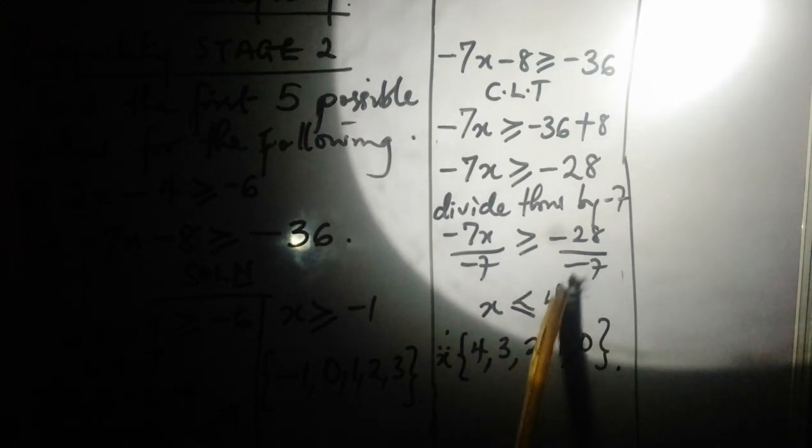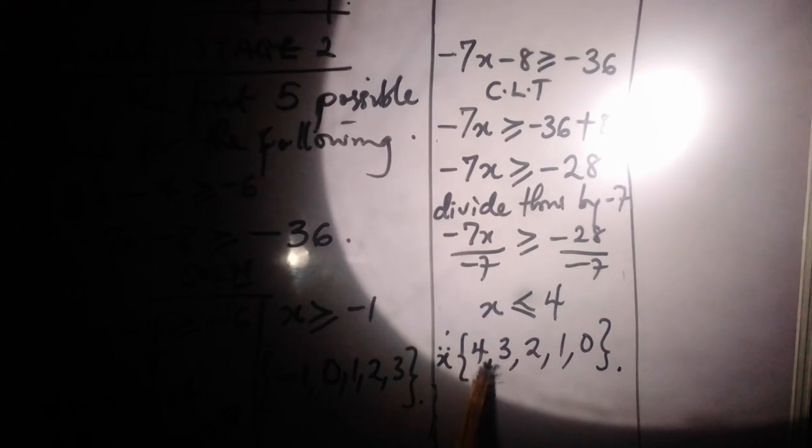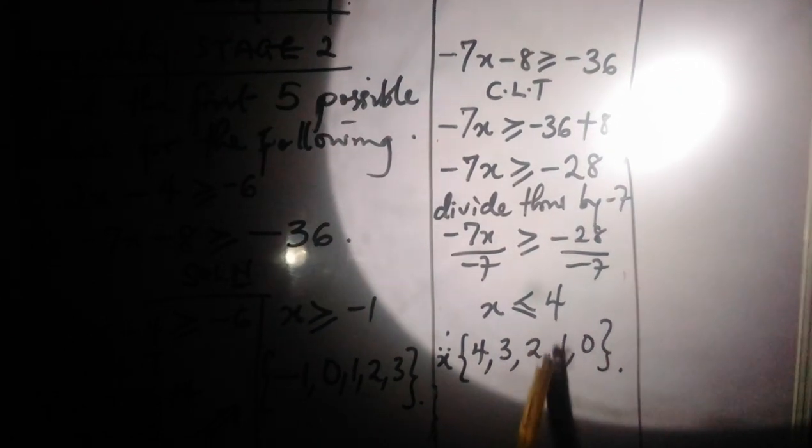The values of x are smaller than or equal to 4. So you have to start with 4. Others will be smaller than 4: 3, 2, 1, 0.